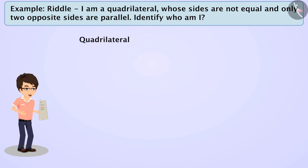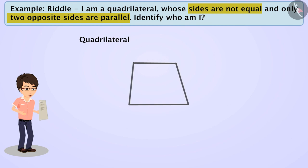The puzzle indicates that the given shape is a quadrilateral where no sides are equal and only two opposite sides are parallel. Let's draw a quadrilateral based on this information. First, we will draw two opposite sides that are parallel but their lengths are not equal. Then, we will connect the remaining two sides to make a figure.